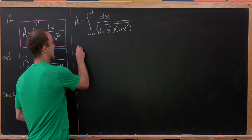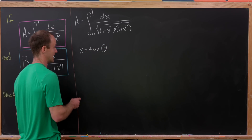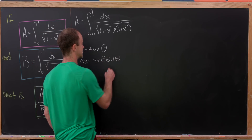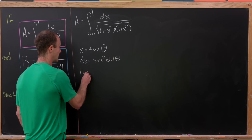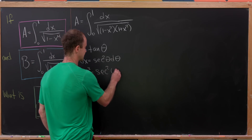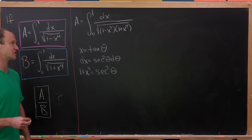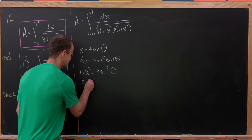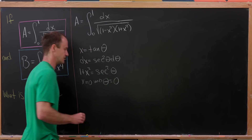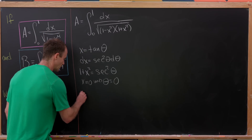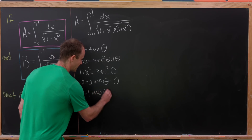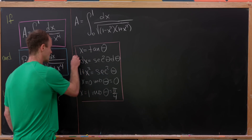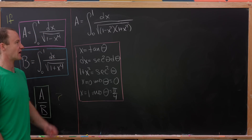Let's set x equal to tangent of theta. That makes dx equal to secant squared of theta d theta, since that's the derivative of tangent. Then 1 plus x squared equals secant squared by the trigonometric identity 1 plus tangent squared equals secant squared. For the bounds: when x equals 0, theta equals 0 since tangent of 0 is 0; and when x equals 1, theta equals pi over 4, since the tangent of pi over 4 is 1.